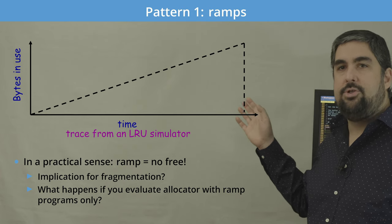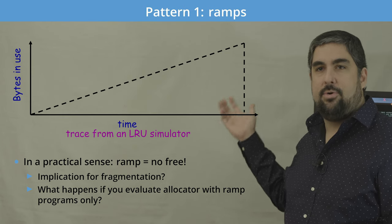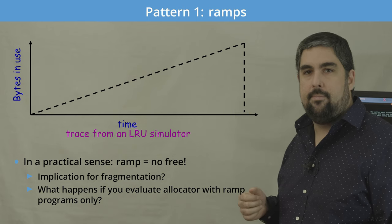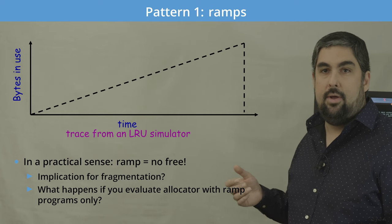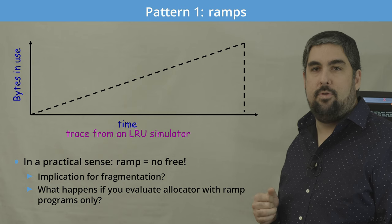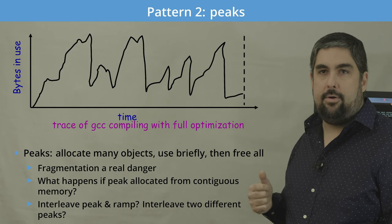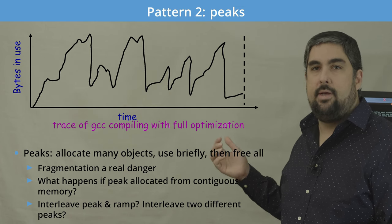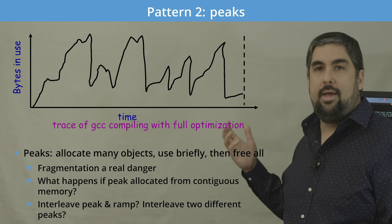In the ramp case, think of something like an LRU simulator — simulating an LRU cache for a storage system. Over time it uses more and more memory to contain all the state it needs. In a ramp, there are basically no frees, so we don't need to worry about fragmentation. We can simply keep allocating using a bump pointer from a large pool of memory to satisfy the entire application's needs.